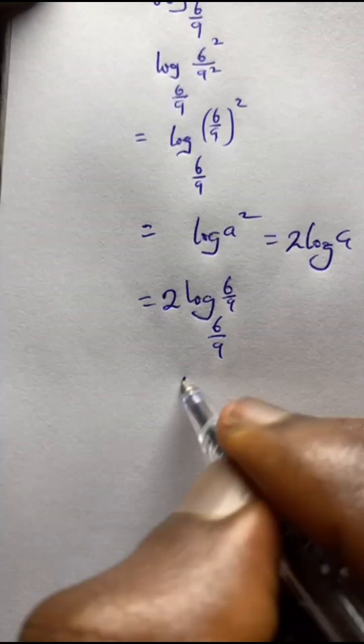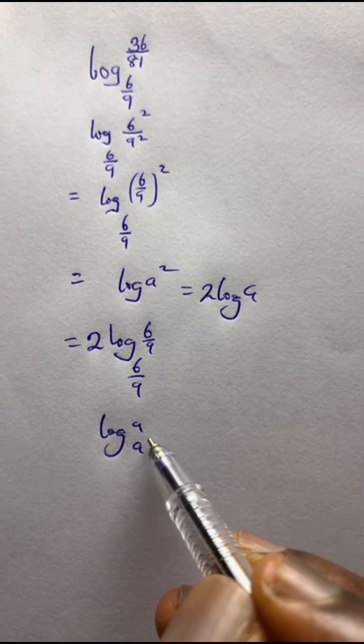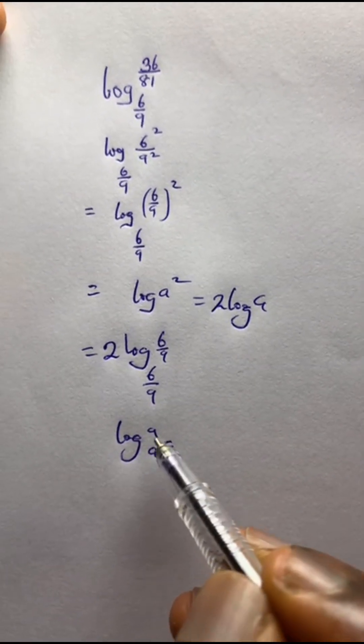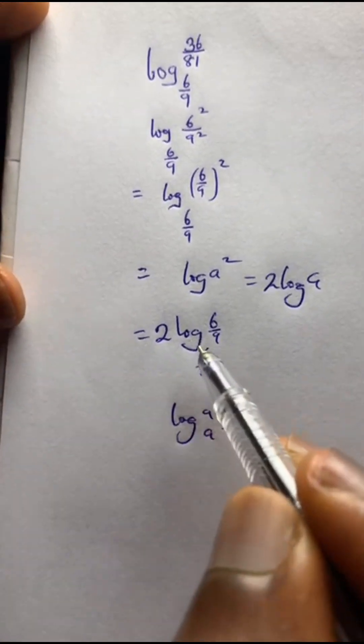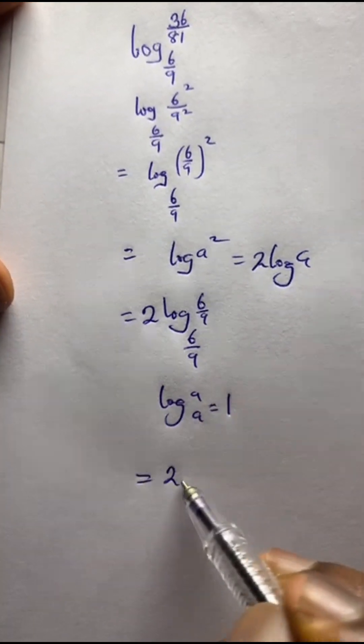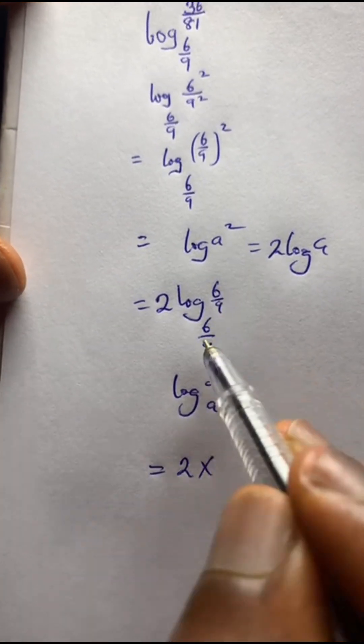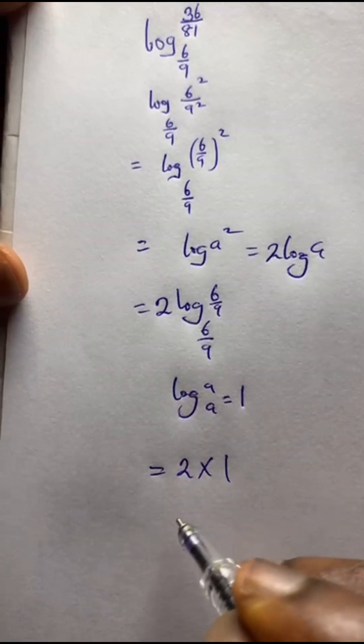And remember, when you have something like this - when the base and the number of a log are the same, you get 1. So the same thing happens here. We have 2 times, since the base and the number are the same, so that becomes 1.